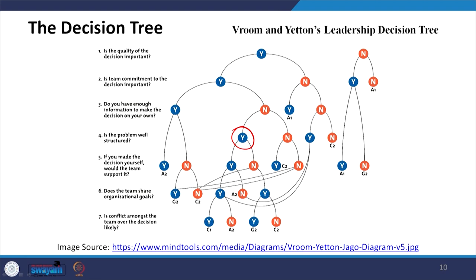If the problem is not well structured and the answer is no, you ask: would the decision made by yourself be supported by the team? If yes, that leads to the A2 style. In A2, the quality of the decision is important, the team is committed, you have enough information, and the decision made yourself would be team-supported.